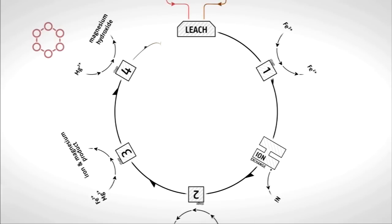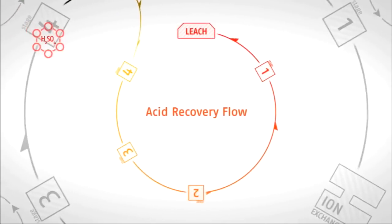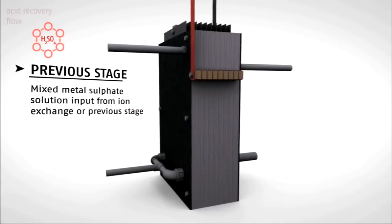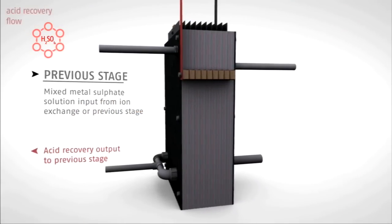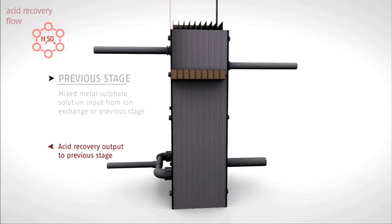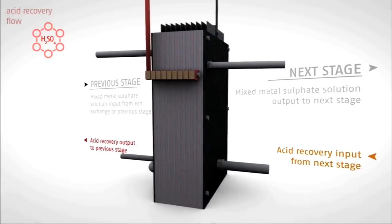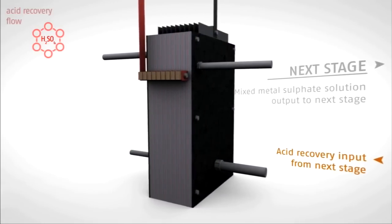Now we explore how acid is recovered during the process. When dissolved metals in the PLS plate to the cathodes, two important reactions occur at the anodes.